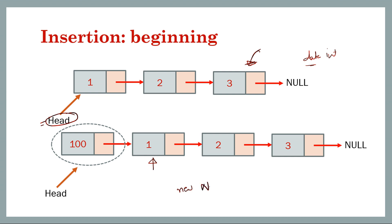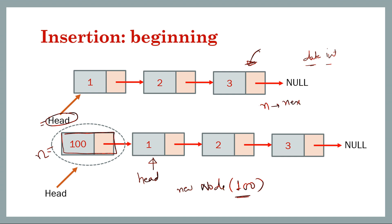We create a new node with a value of 100 — this is a constant time operation where we just assign values to data and next as null. Once this node is created, with its next pointing to null, we set the new node's next to whatever was the earlier head, and the new head becomes the new node. So this is a constant time operation, O(1).